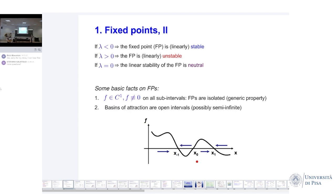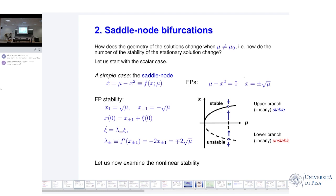Saddle-node bifurcations — now we're getting a little bit serious. How does the geometry of the solution change? How do the number or the stability of the stationary solutions change? We start with the scalar case. This is the so-called normal form of a saddle-node bifurcation. So: x-dot equals mu minus x-squared. The fixed points are obtained by setting the right-hand side equal to zero — mu minus x-squared equals zero. That gives us two branches: x equal to plus or minus square root of mu. So if I plot x versus mu, these two branches are these.